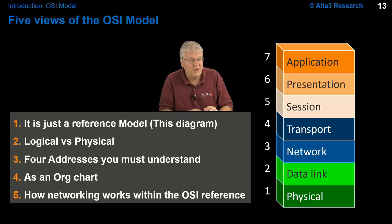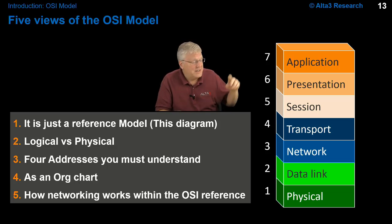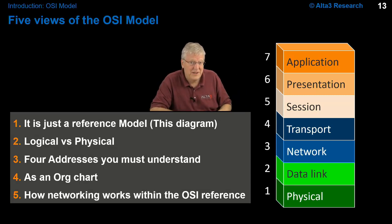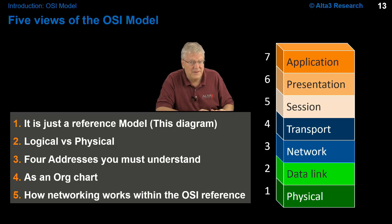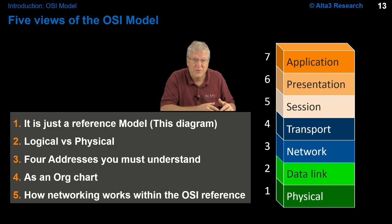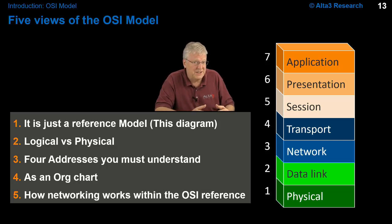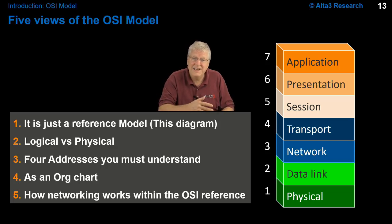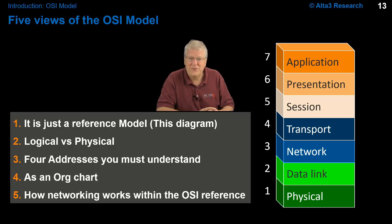Next, we'll talk about logical versus physical. Layer 7 all the way down to halfway through layer 2 are pure software — they're all logic. The bottom half of layer 2 down to layer 1 is physical. There are addresses applied at certain layers, and they have a meaning and purpose, and we need to understand what they are.